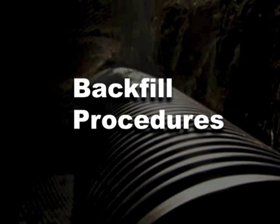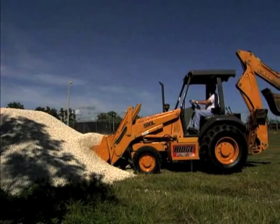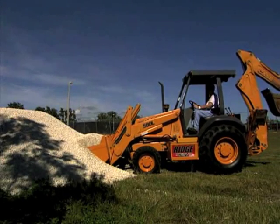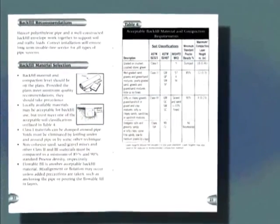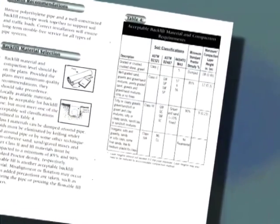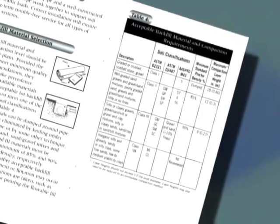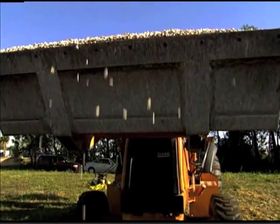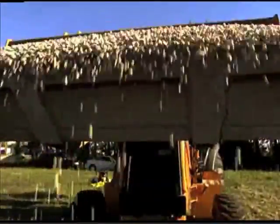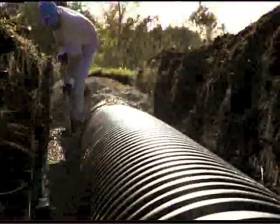There are many types of backfill material that can be used to successfully install HDPE pipe. As shown on the chart in the pocket installation guide, acceptable backfill materials are categorized into three classes. Class 1 backfill material consists of angular crushed stone. Class 1 backfill can achieve minimum compaction requirements by dumping the backfill into the trench and knifing the material under the haunch of the pipe.